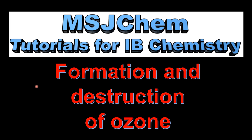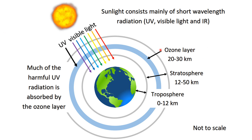This is MSJChem and in this video I'm going to be looking at the formation and destruction of ozone. Let's start by looking at the ozone layer. The ozone layer is located about 20 to 30 kilometers above the surface of the earth in the lower stratosphere.